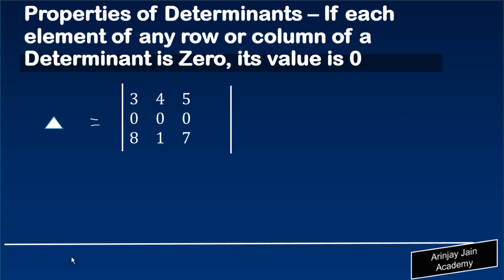Let's look at some properties of determinants. In this case, we're going to see that if each element of any row or column of a determinant is zero - not a single element, but each element - its value is equal to zero.